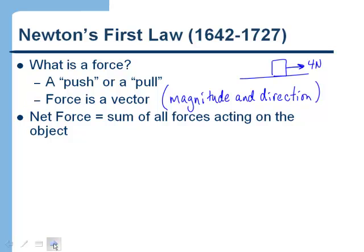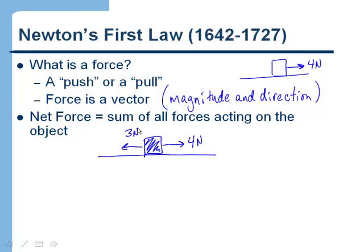The net force is the sum of all the forces acting on an object. We have to be careful because force is a vector, so direction matters. If there's a force of four Newtons to the right and also a force of three Newtons to the left, the net force would be one Newton to the right — the three Newtons to the left cancels out three of the four Newtons to the right. Forces acting in the same direction add; forces acting in opposite directions subtract.